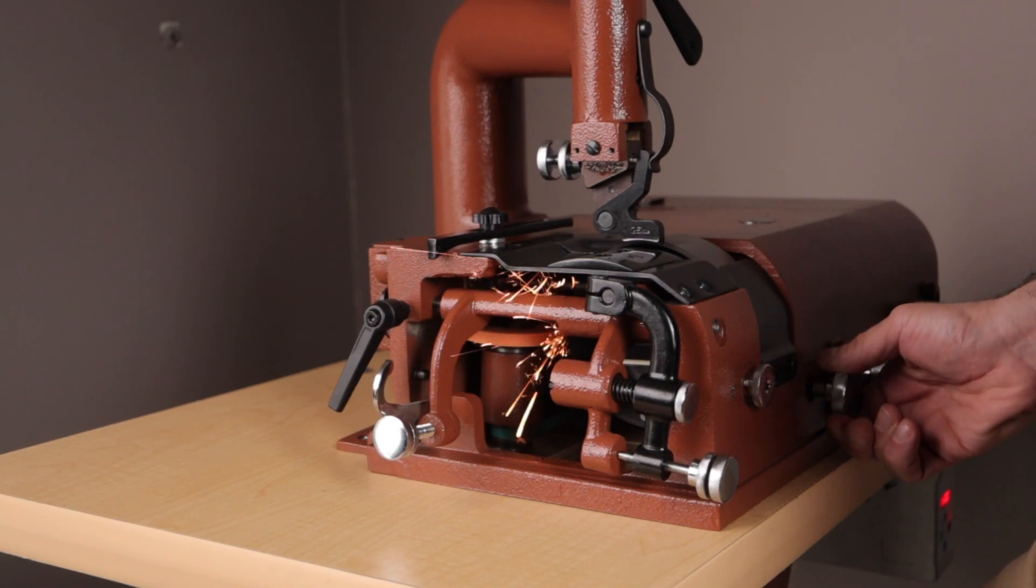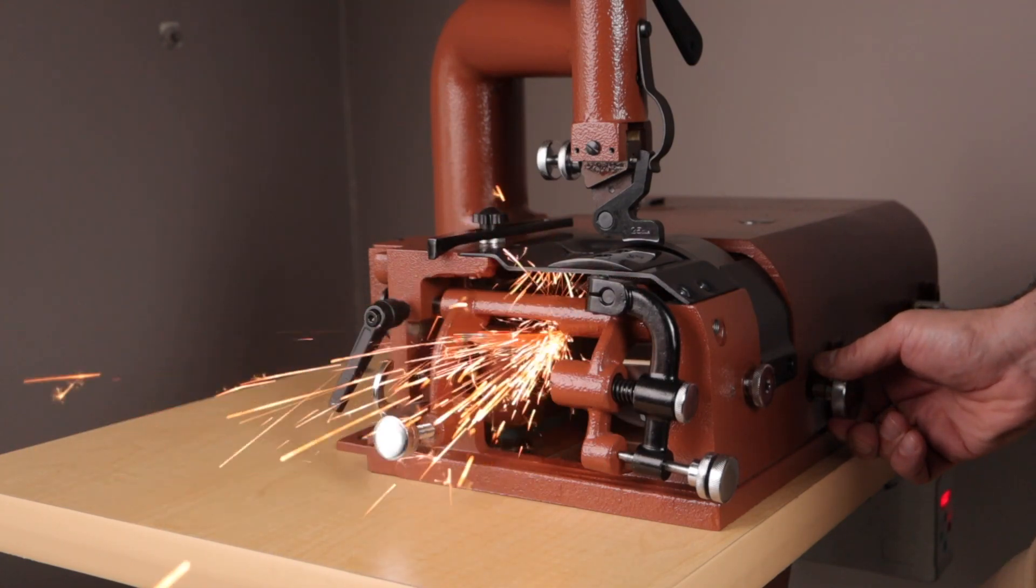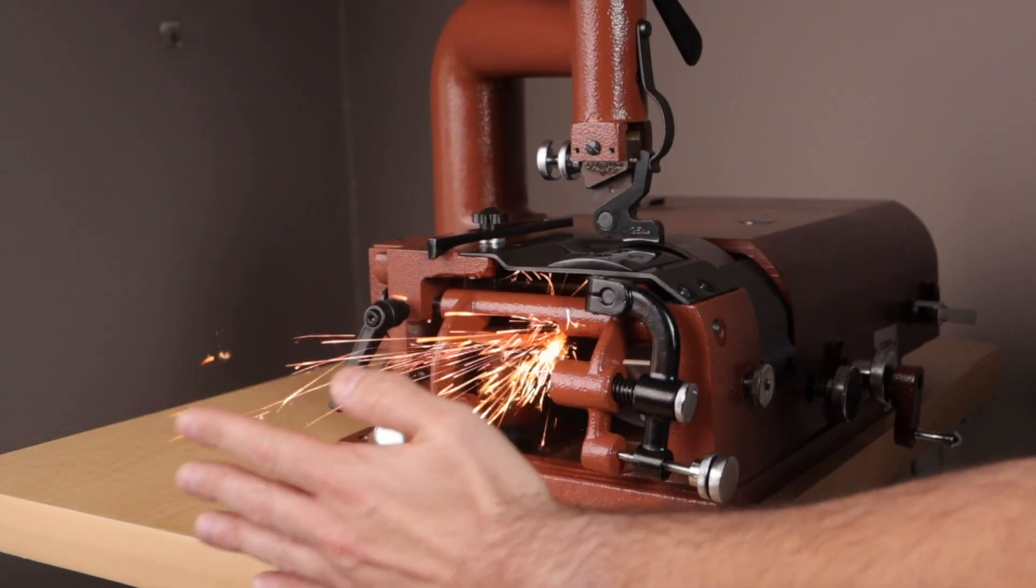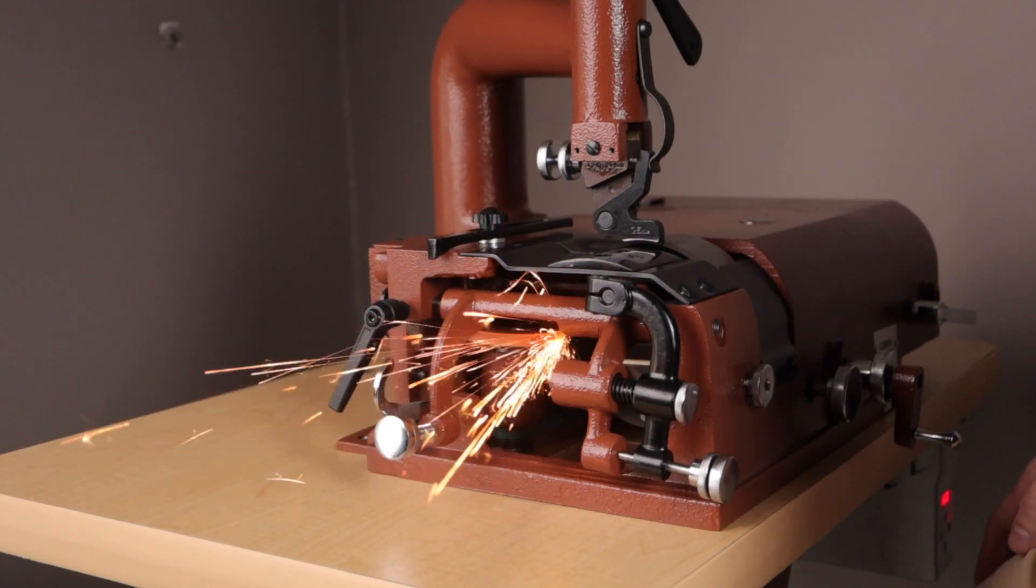You want to slowly turn the sharpening stone position knob by bringing it towards the blade. You want the stone engaged to the blade enough to have the sparks coming out of the machine about eight inches. Don't worry about the sparks, they won't hurt you or cause any damage to the machine.